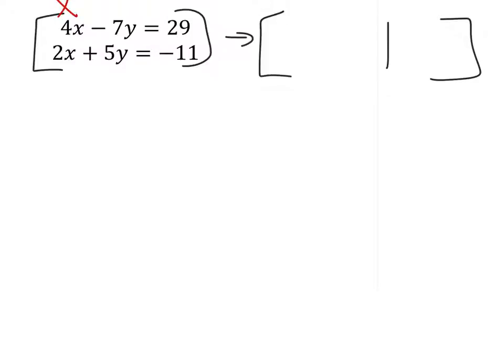So, from the x column I have 4 and 2, and from the y column I have a negative 7 and a 5, and from the answers here I've got 29 and 11. Negative 11, sorry.